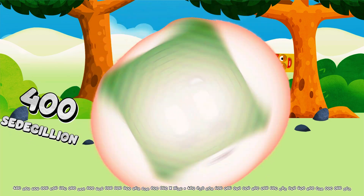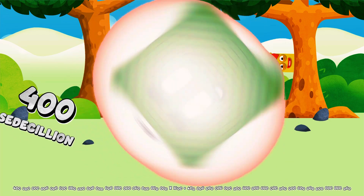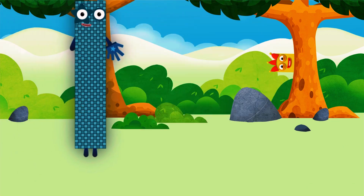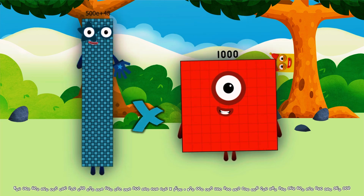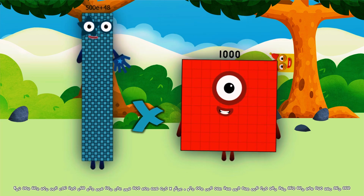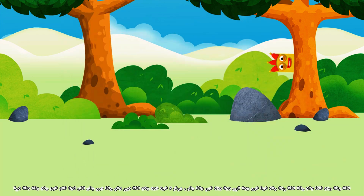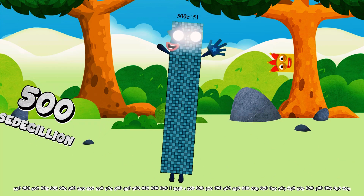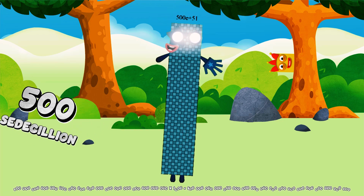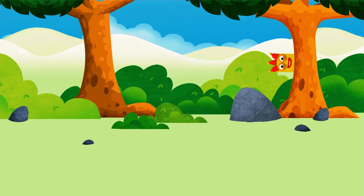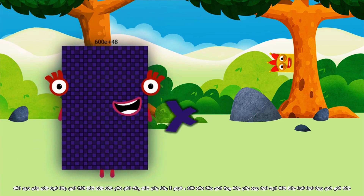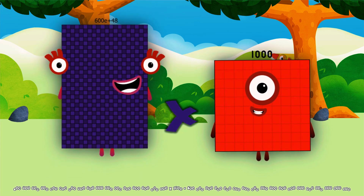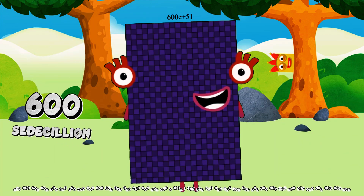500 Cedicillion. 600 Cedicillion multiplied by 1,000 equals 600 Cedicillion.